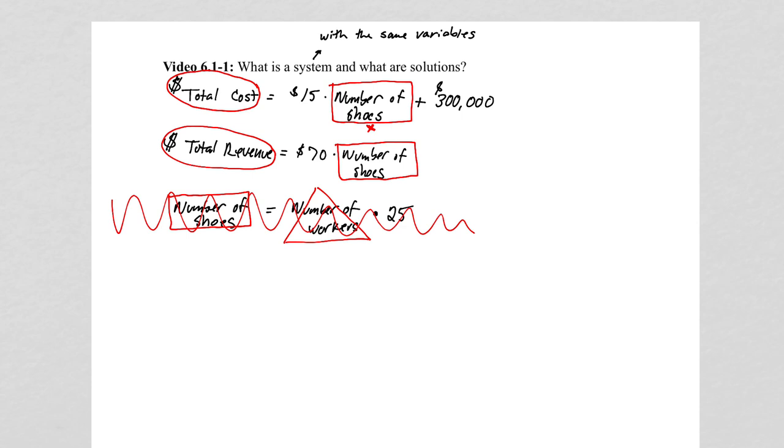And we can see the number of shoes, at least in these two equations, these are our independent variables. And our dependent variable is on the left. The total cost is dependent on the number of shoes being multiplied times 15 and adding 300,000 to it. And the total revenue is depending on the number of shoes being multiplied times 70.